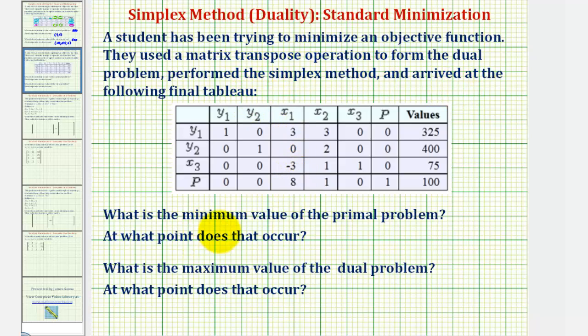We want to determine the minimum value of the primal problem, as well as at what point that would occur. And then also determine the maximum value of the dual problem, and at what point that would occur.